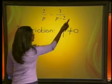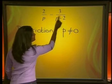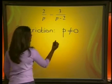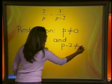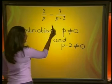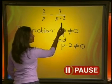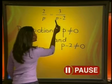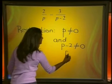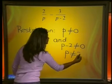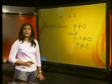Now, in this fraction on the right-hand side, we have 3 divided by p minus 2. We know that p minus 2 may not be equal to 0. And p minus 2 may not be equal to 0, so we've got to think: what value of p makes this denominator equal to 0? The answer is obviously 2, because 2 minus 2 would give me 0. This means that p cannot be equal to 2.